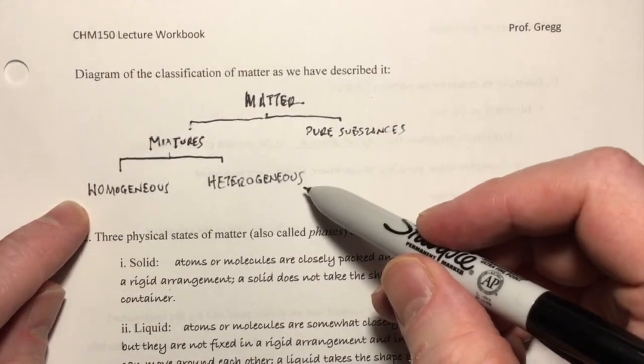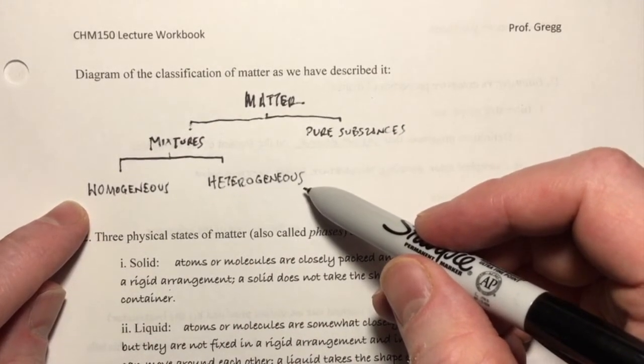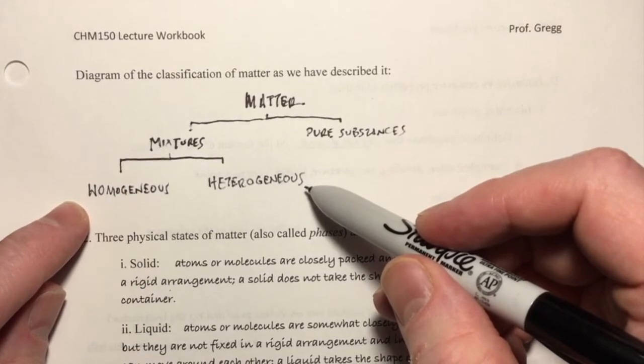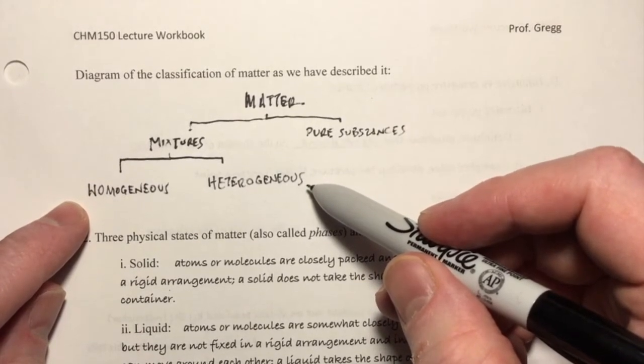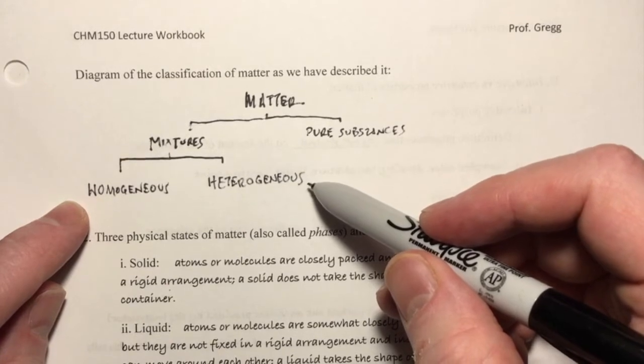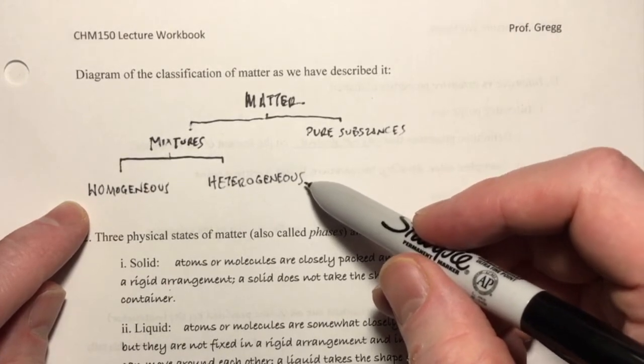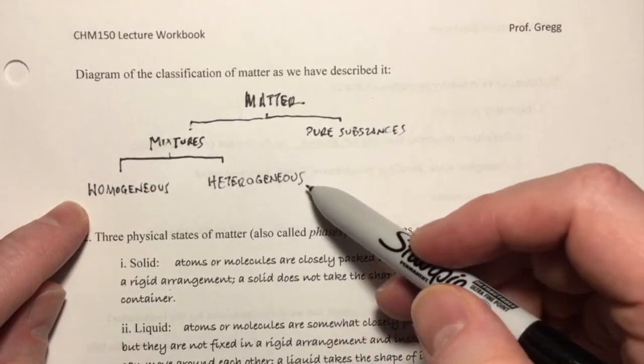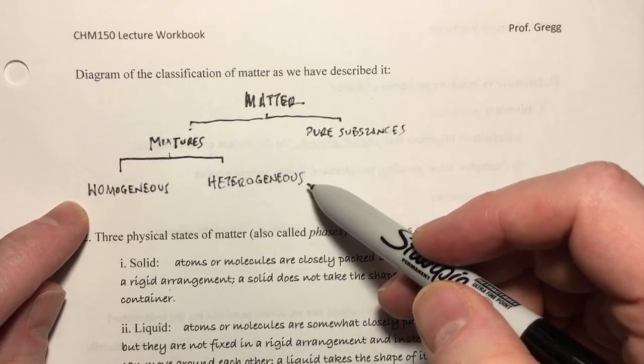A heterogeneous mixture might be something like a salad that you would have for lunch. So you can definitely see that there, by looking at it, that there are different parts in there. There's some tomatoes, some lettuce. It has a different composition, depending on where you look in that mixture.